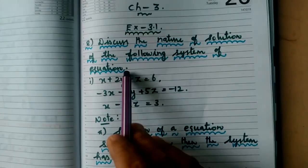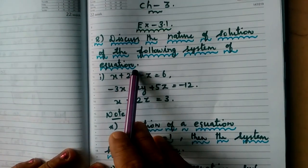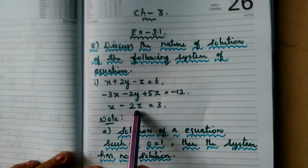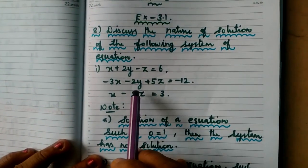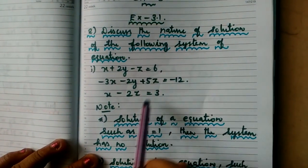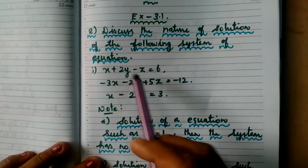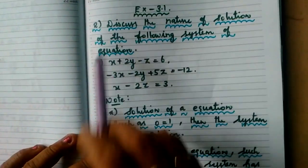Discuss the nature of solution of the following system of equations. So what is the question about? We are going to discuss about the solution of the equation. Previously, for X is equal to this one, Y is equal to this much, Z is equal to this one, we got equal. So for that kind of solution, what based on that? That kind of question only, second one about that.